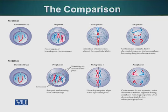In mitosis, at metaphase, the individual chromosomes line up at the metaphase plate. In metaphase one of meiosis, the individual chromosomes are not lining up — it is the homologous chromosomes which are lining up as tetrads at the metaphase plate. Homologous chromosomes are sitting next to each other.